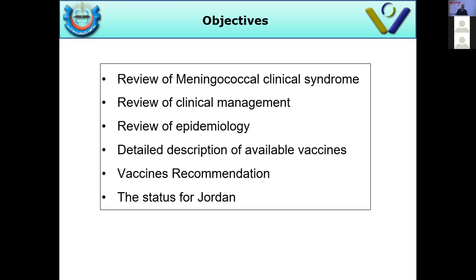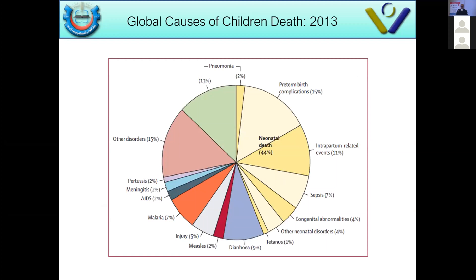Meningitis is responsible for about 2% of childhood mortality, and of course is also responsible for bacteremia and sepsis. So it can contribute to different causes of childhood mortality around the world.